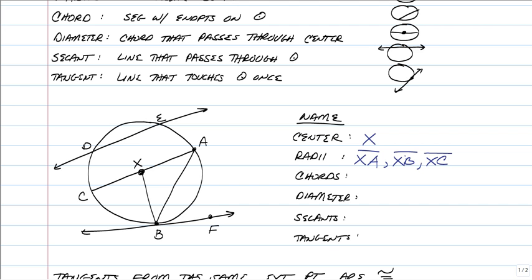Chords. Remember, chords is just a segment that has two points on the circle. So that would be AB. Another one would be segment AC and segment ED. Your diameter. There's only one. It's just AC. It is a chord that passes through the center.